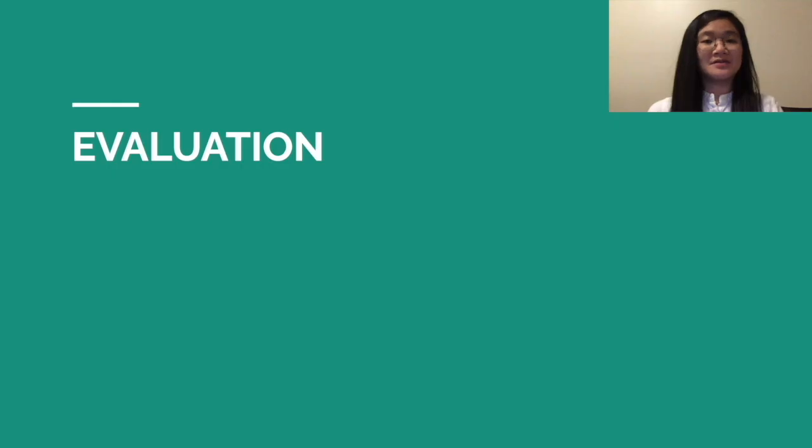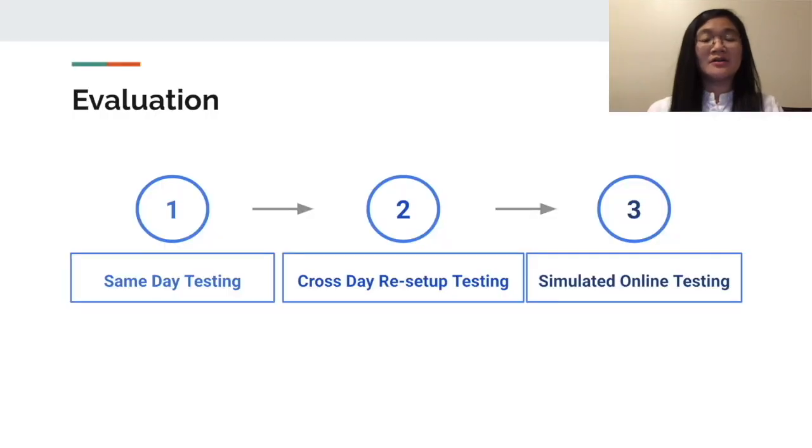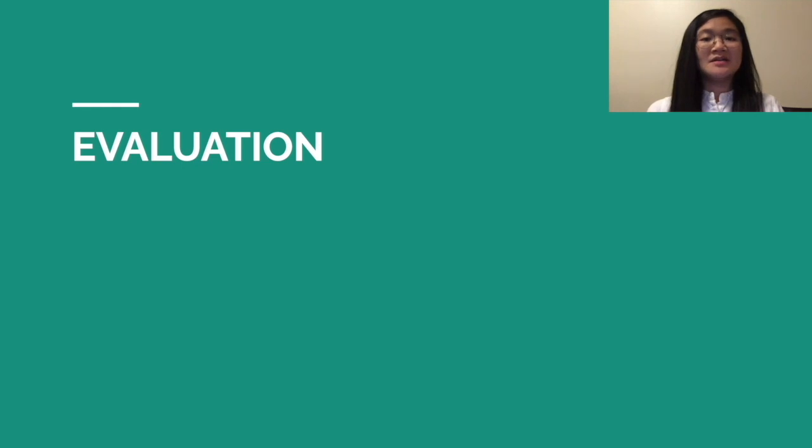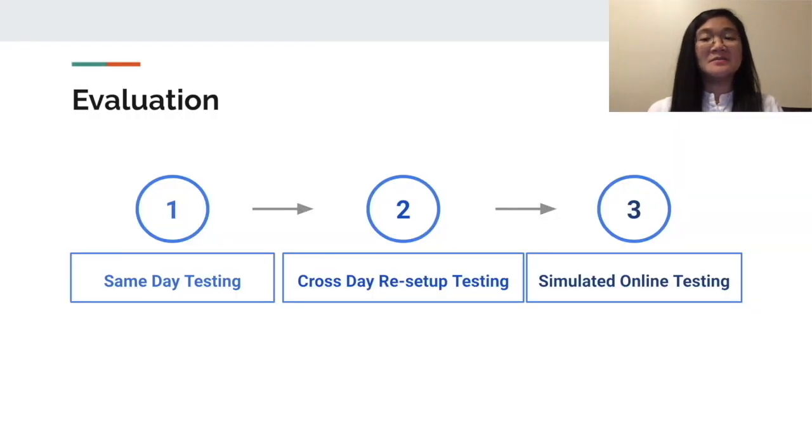The evaluation of the system was divided into three parts: Sunday testing, cross-story setup testing, and simulated online testing. The Sunday testing was used to evaluate the system's general ability to identify home activities. The cross-story setup testing was used to evaluate the performance on that scenario. Finally, the simulated online testing was used to evaluate the feasibility of applying VibroSense to real-world scenarios by continuously checking home activities over a five-hour period.